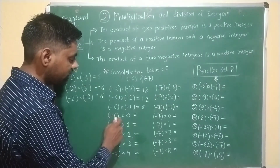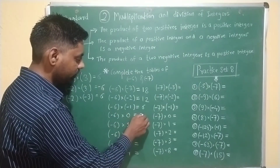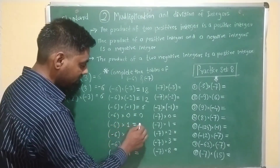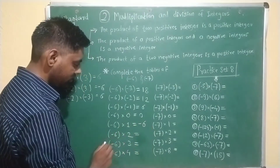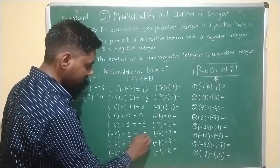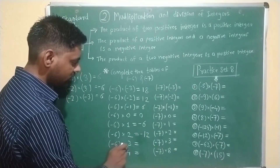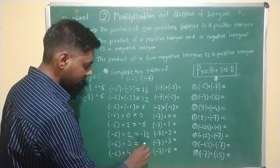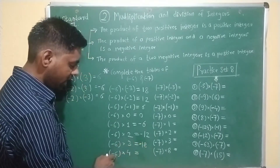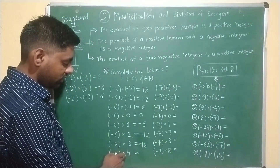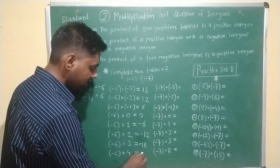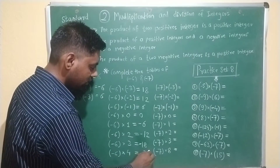Minus 6 multiplied by 0, the answer is 0. Minus 6 multiplied by 1, the answer is minus 6. Minus 6 multiplied by 2, the answer is minus 12. Minus 6 multiplied by 3, the answer is minus 18. Minus 6 multiplied by 4, the answer is minus 24.